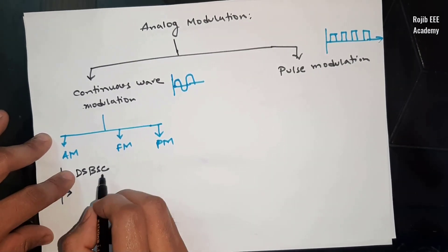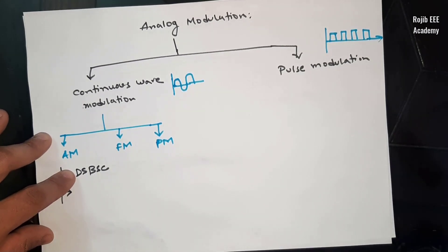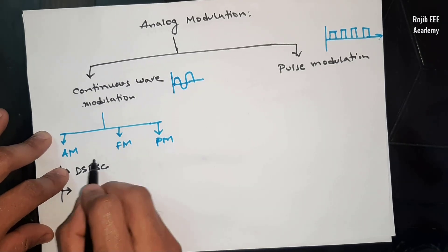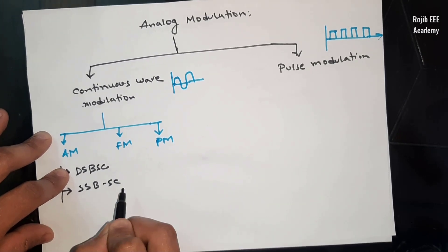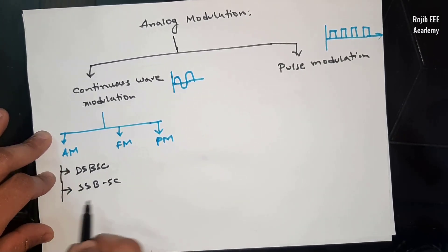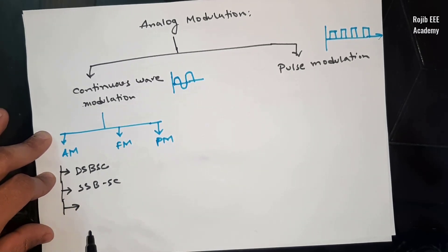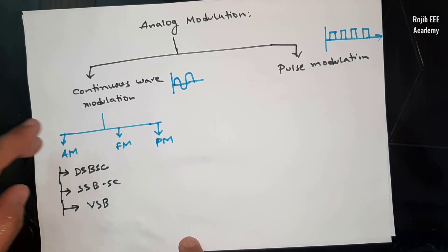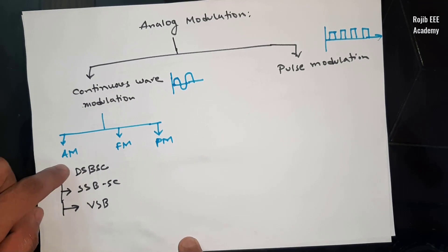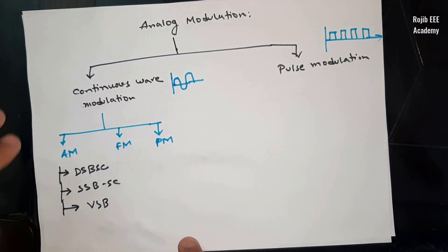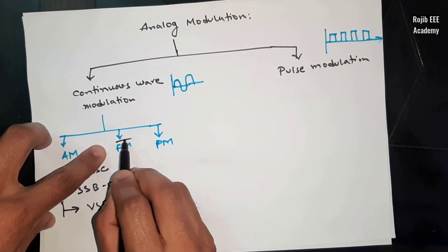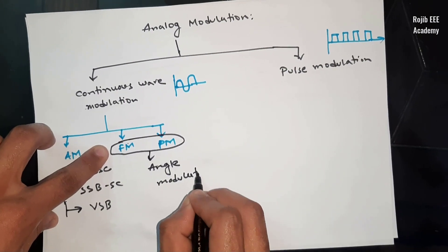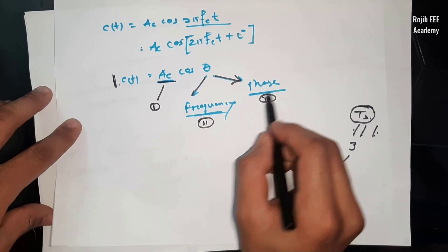However, DSBSC still has a drawback: bandwidth. So the updated version is SSBSC — Single Sideband Suppressed Carrier — which solves the bandwidth issue. Further, we have VSB — Vestigial Sideband. So the AM family includes: AM, DSBSC, SSBSC, and VSB. Frequency and phase modulation together form angle modulation.